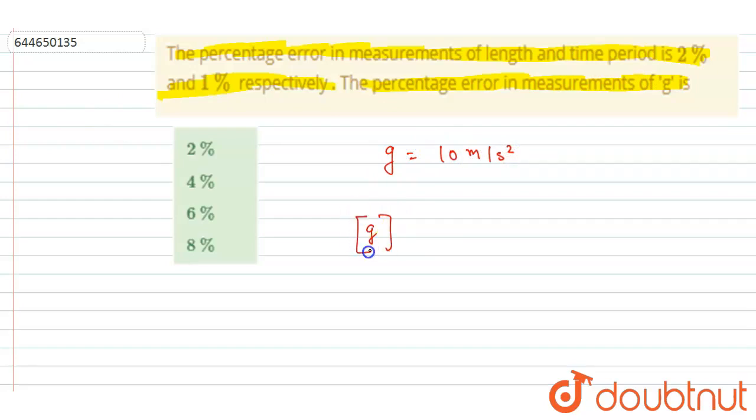dimension of g, it is L T to the power minus 2. So we are talking about the error in g. I will write the percentage error possible in g. If you see the powers